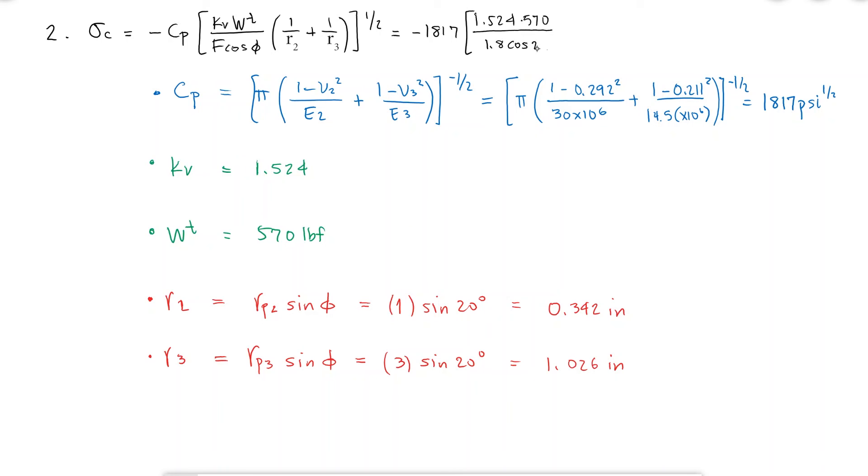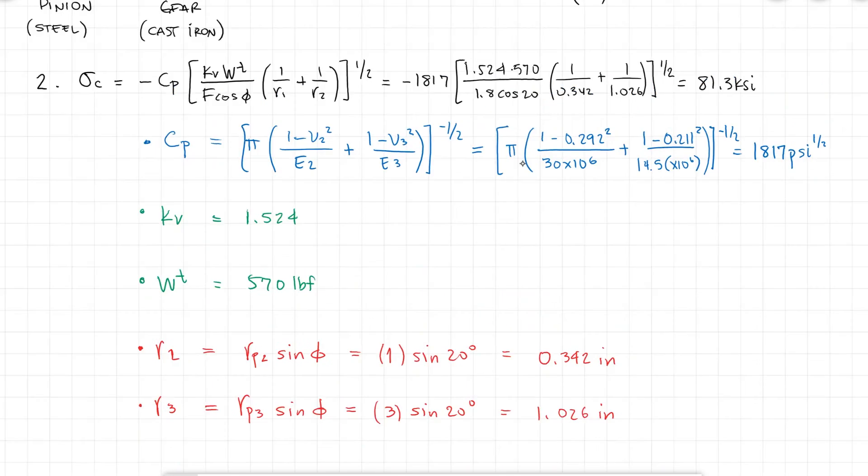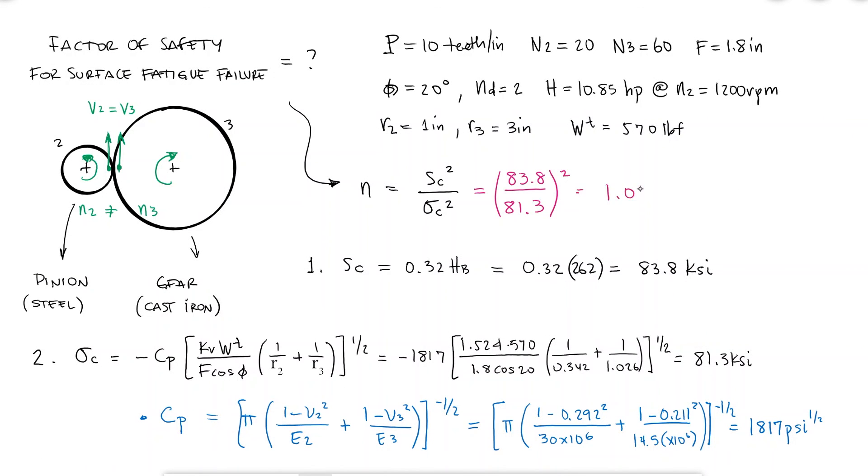Substituting these values, we find that the stress is 81.3 ksi, and the factor of safety is therefore 1.064. In the description of this video, I'll leave you with a link to a design problem where we look at the bending stress of the teeth, and the pitting at the same time, so make sure to check that out.